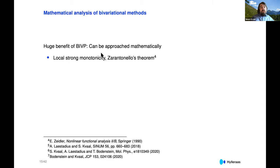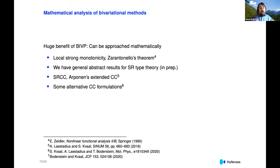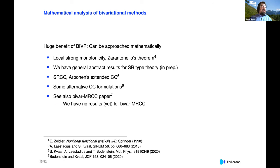The huge benefit of the bivariational principle is that it can be approached from the mathematical point of view. Using concepts from nonlinear functional analysis called local strong monotonicity and Zarantonello's theorem, we can actually prove something about bivariational approximations. We have general abstract results for single-reference type theory in preparation, and for single-reference coupled cluster theory and Arponen's extended coupled cluster theory, we have a complete mathematical analysis. However, we have no results yet for the method I'm going to present.